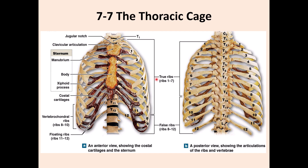The ribs are divided into two parts. One is called true ribs, which are ribs 1 to 7. Why is that? Because each rib has its own cartilage. This is the cartilage that the rib uses to attach to the sternum.